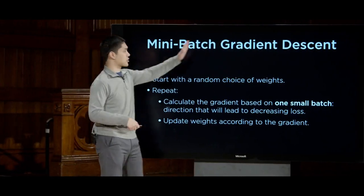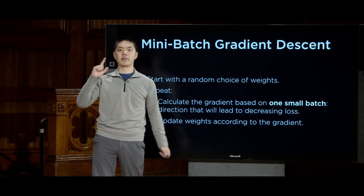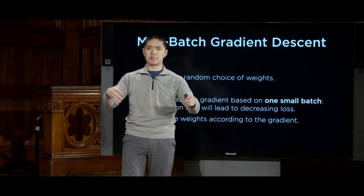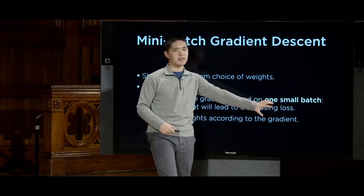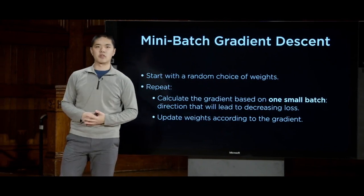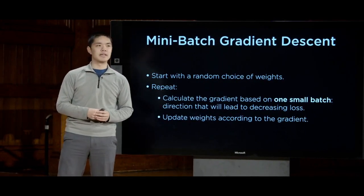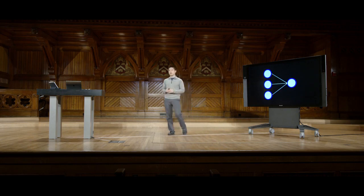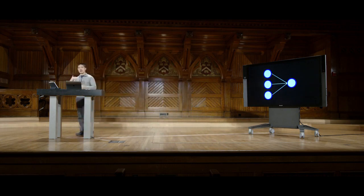There are trade-offs between looking at all data points versus just one. A popular middle ground is mini-batch gradient descent, where instead of all data or a single point, we divide the dataset into small batches. We look at a small number of points at a time, getting a more accurate gradient estimate than a single point while not requiring the full computational effort of processing every data point.